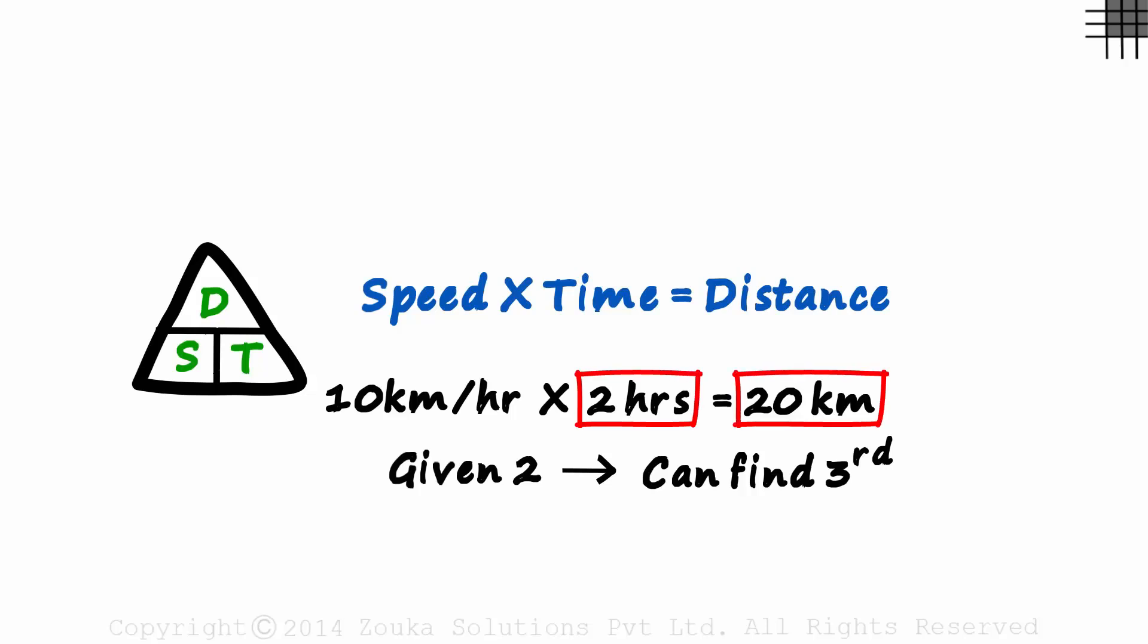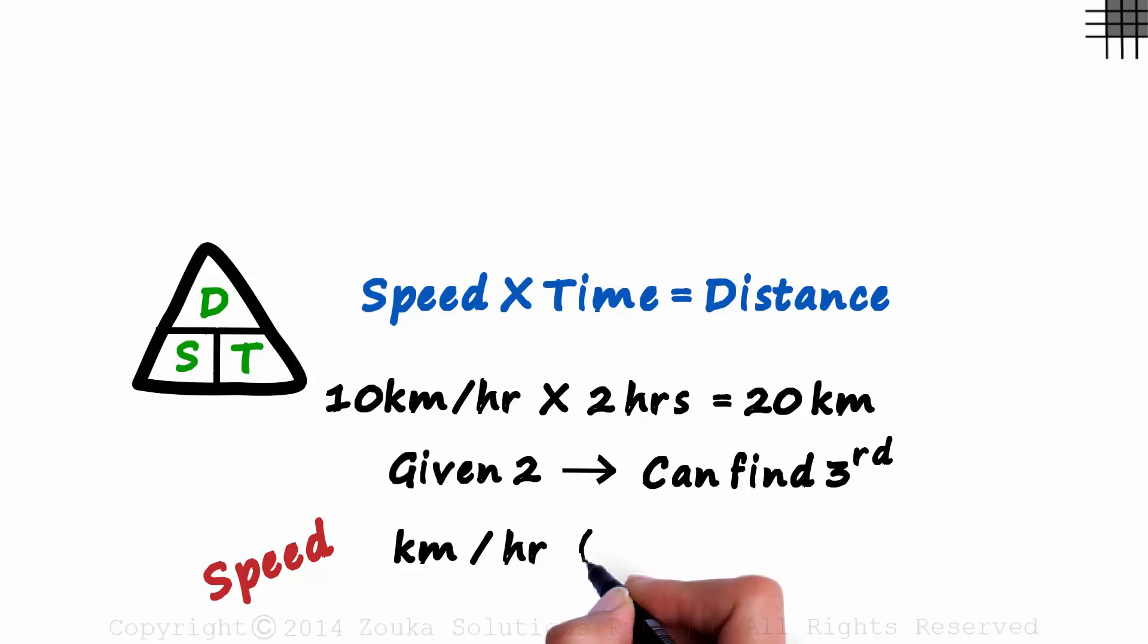Units of time and distance are straightforward, but units of speed can get interesting. It can be provided as kilometers per hour or sometimes even meters per second. It is important to keep in mind that the units of all three parameters must be in sync. It would be incorrect to say 10 meters per second multiplied by 2 hours is 20.